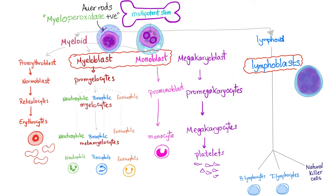Here is hematopoiesis. We start with multipotent stem cells, then myeloid and lymphoid stem cells. The myeloid blasts are divided into myeloblast and monoblast. The myeloblast has Auer rods, which are myeloperoxidase positive — which makes sense since their siblings the neutrophils produce myeloperoxidase.